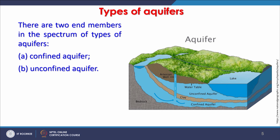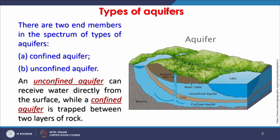An example of a confined aquifer is shown here. An unconfined aquifer receives water directly from the surface, while a confined aquifer is trapped between two layers of impermeable rocks, which do not allow water out of the aquifer layer. If a layer saturated with water is confined from top and bottom by impermeable layers, that aquifer is called a confined aquifer.